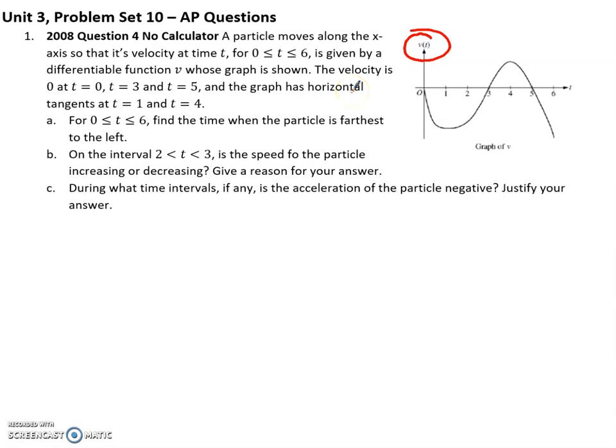Some important things to notice about this first graph is that it is already the graph of the derivative. This is already the graph of speed, and they give it to me from 0 to 6. They tell me the velocity is 0, which means the speed is 0 at t = 0, 3, and 5. The graph has horizontal tangents at t equals 1 and at 4. Those are just things to keep in mind as we do these problems.